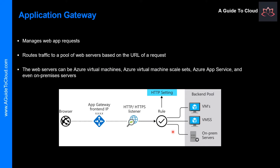The load balancing works with the OSI Layer 7 routing implemented by Application Gateway, which means that it load balances requests based on routing parameters such as hostname and paths used by the Application Gateway rules. In comparison, other load balancers such as Azure Load Balancer function at an OSI Layer 4 level and distribute traffic based on the IP address of the target of a request.